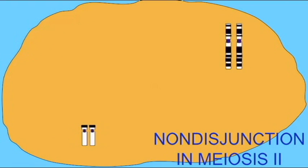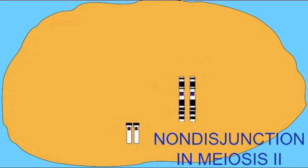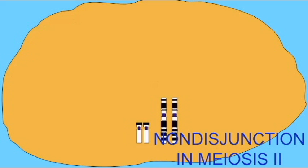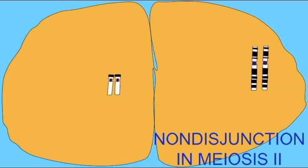If a non-disjunction of chromosomes occurs during meiosis II during spermatogenesis, then half the gametes produced will be normal. The other half will possess an abnormal number of chromosomes.